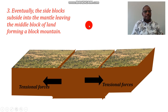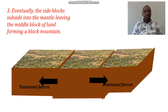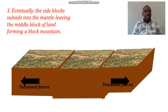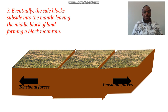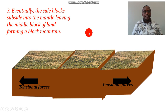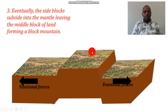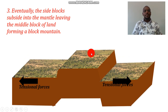Once the fault lines have been formed, because of the continued tension within the crusted rocks, the side blocks are going to sink into the mantle, or subside into the mantle, and as they sink they are going to leave a block of land standing above the general ground.